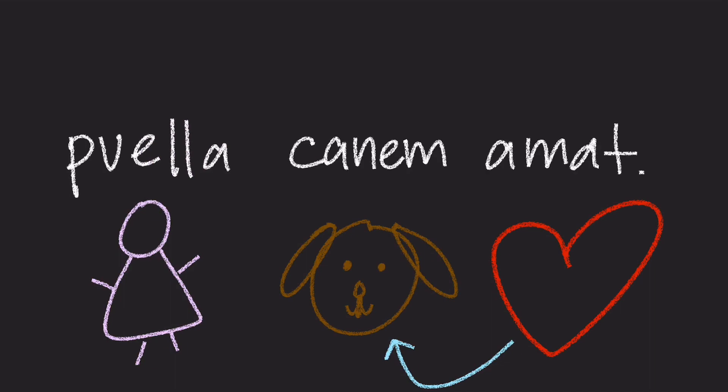Let's take a look at a basic Latin sentence as an example. We have the sentence: Puella, Kanem, Amat. In the sentence, we have the word Puella, which means girl. We also have Amat, which is a verb meaning love. And we also have the word Kanem.